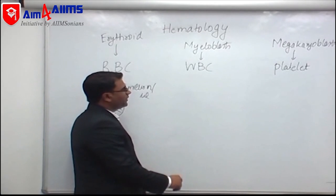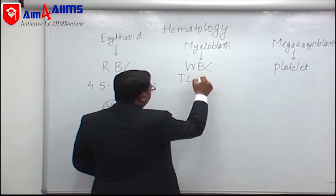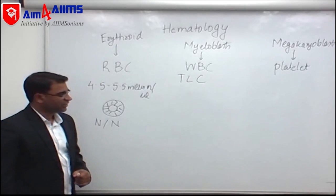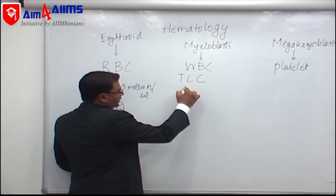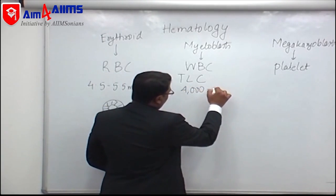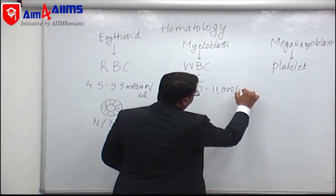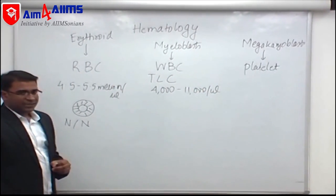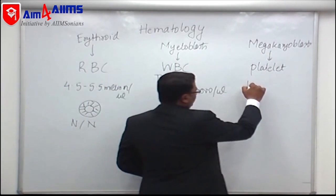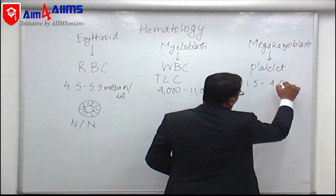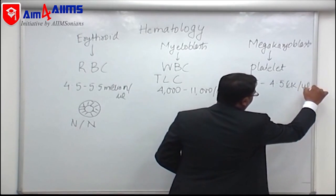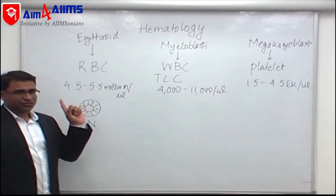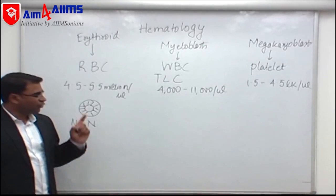The second cell is WBC. The total WBC count is called total leukocyte count, short form TLC. The normal value of TLC is 4,000 to 11,000 per microliter. About the platelets, the normal value is 1.5 to 4.5 lakh per microliter.